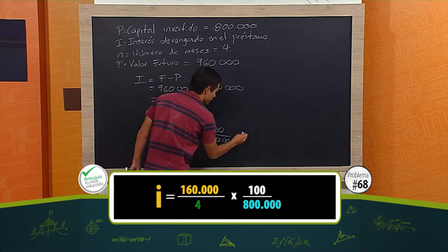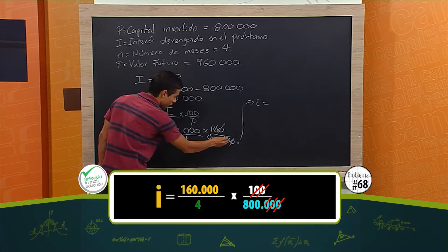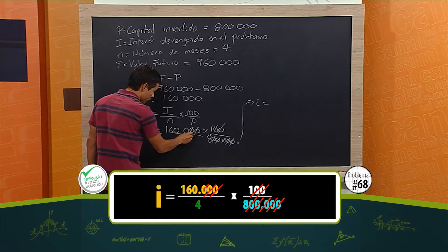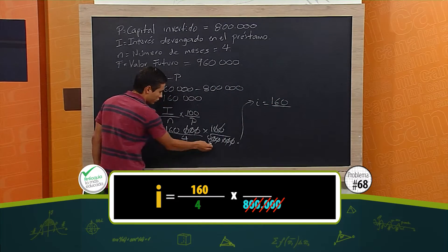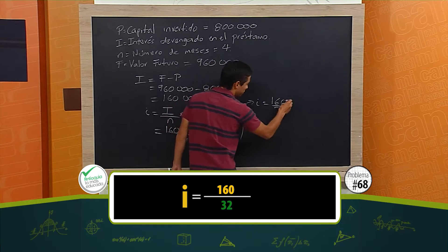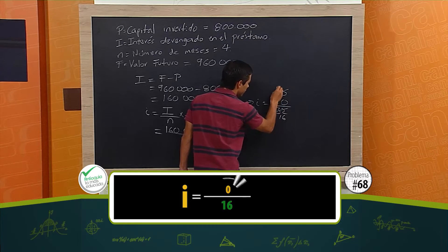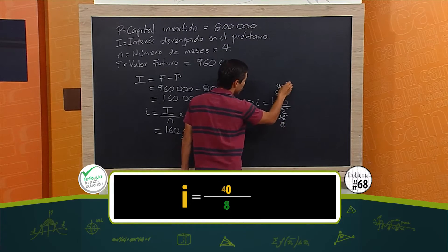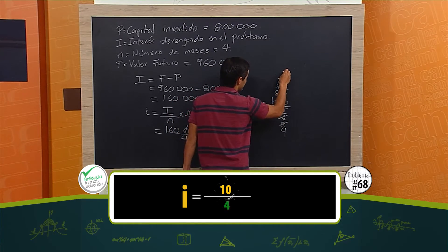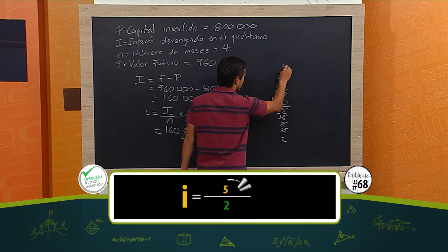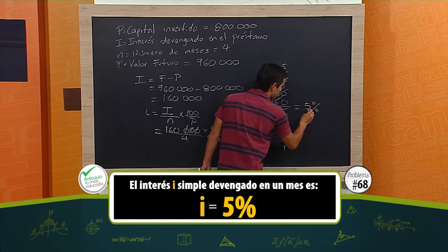Esto nos va a dar igual. Cancelo dos ceros con dos ceros, cancelo tres ceros con tres ceros. Me queda 160 por 1, es decir 160, y 4 por 8 da 32. Ahora simplificamos: 160 entre 32. Dividiendo sucesivamente entre 2: 80/16, luego 40/8, luego 20/4, luego 10/2, y finalmente 5/1. Entonces, el interés mensual es del 5%.